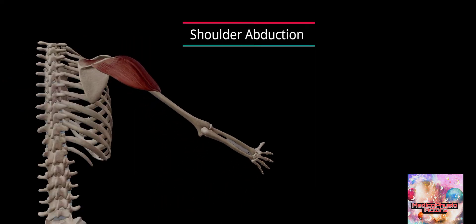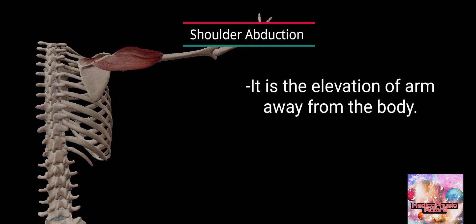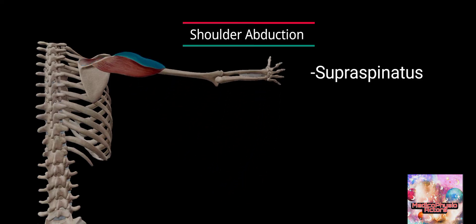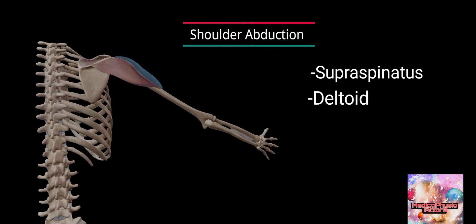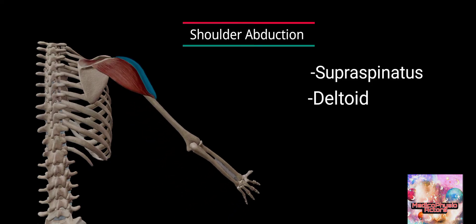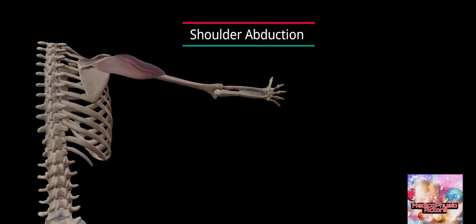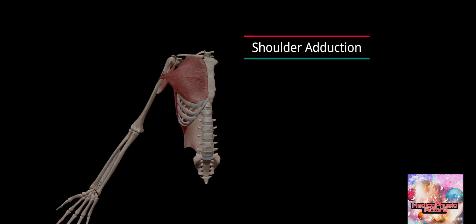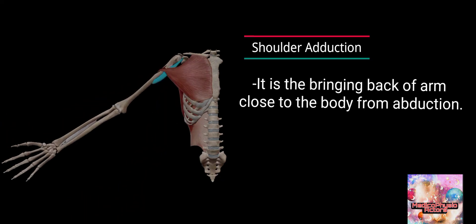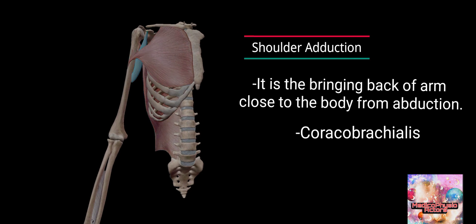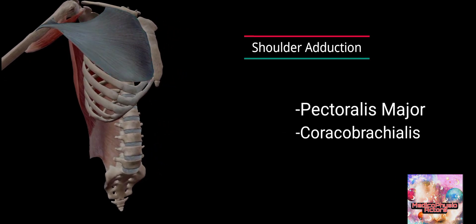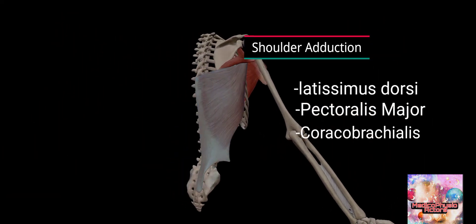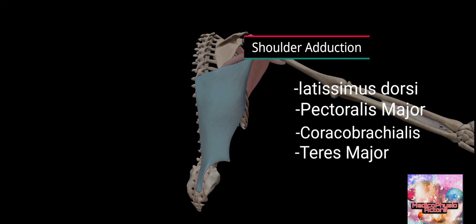Shoulder abduction is the elevation of the arm away from the body. Shoulder adduction is the bringing back of the arm close to the body from abduction. Muscles involved are coracobrachialis, pectoralis major, latissimus dorsi, and teres major.